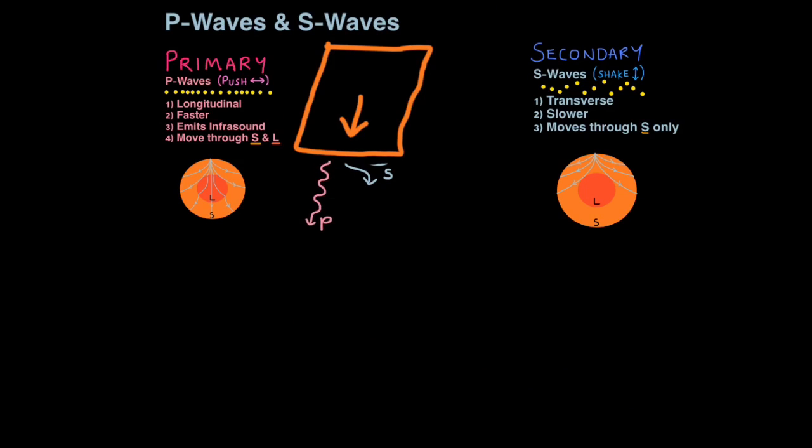So remember, P waves are released first, they're faster, they're longitudinal, and they move through solids and liquids. S waves are released second. They are transverse, they are slower, and move through solids only. Use the S to help you. Remember, S for secondary, S for shake, transverse, S for solids only.